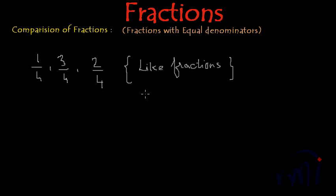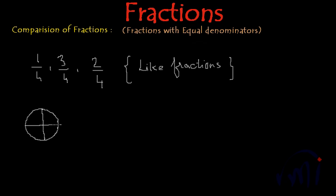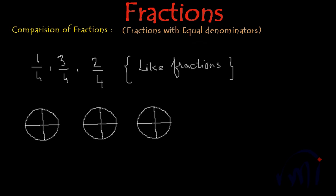When we have the denominator equal or same, how do we compare these fractions? To understand the comparison better, I am going to draw one picture for each of these fractions. For 1 by 4, I am going to draw a circle. Since the denominator is 4, I have to divide it into 4 parts. Now let me make 3 copies of this picture as we have 3 fractions. So I have prepared 3 copies.